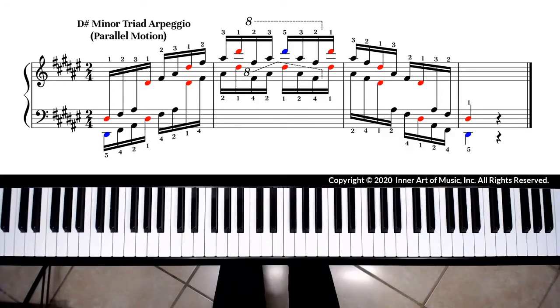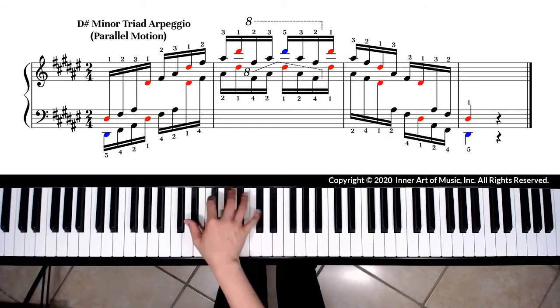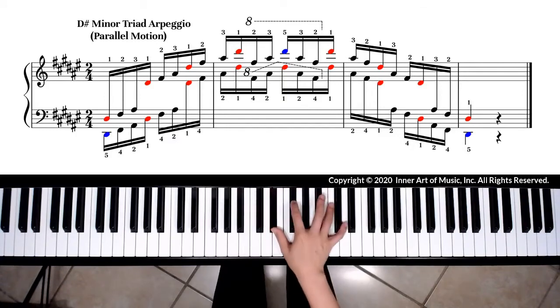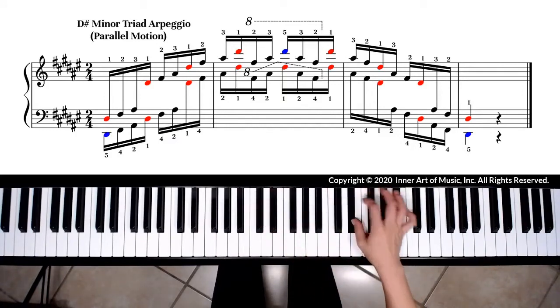For D-sharp minor triad arpeggio fingering, we use right hand fingering 1, 2, 3, 1, 2, 3, 1, and so on.